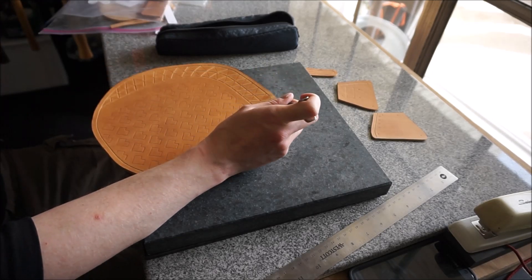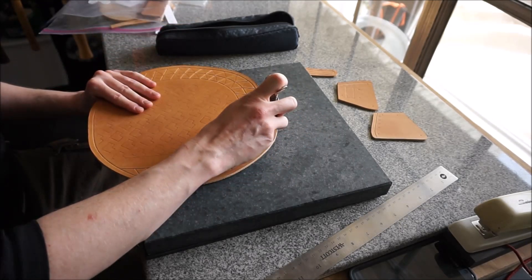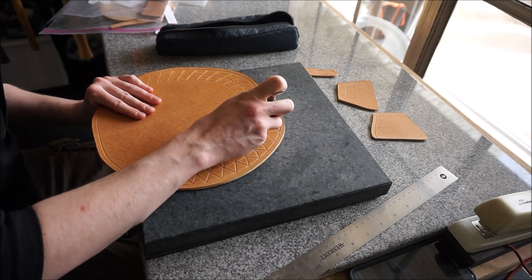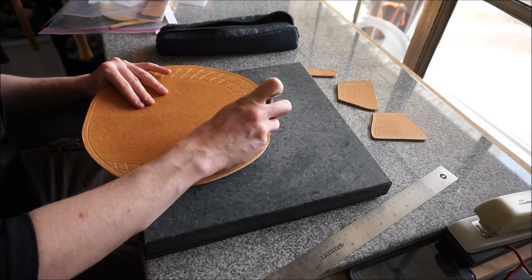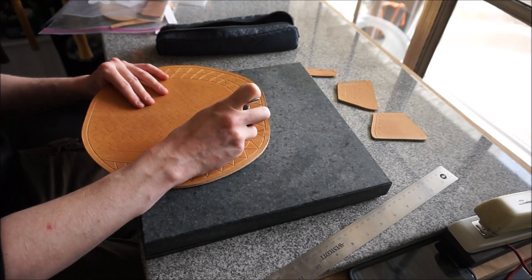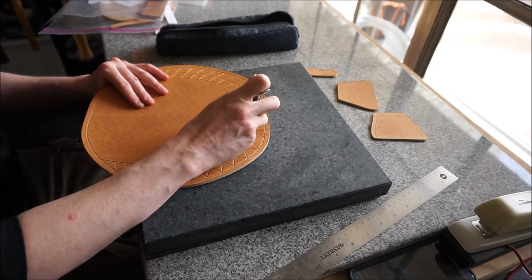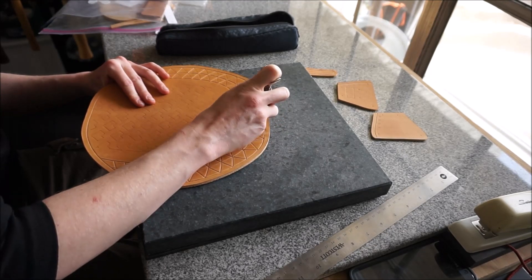Which means starting over from step one, because if the core of the leather is not wet, that is not a matter of just spritzing the surface. That's a matter of going and re-soaking it and then letting the surface dry out again.